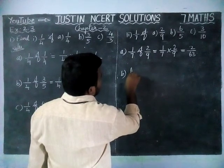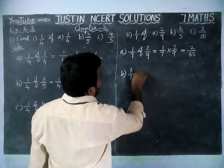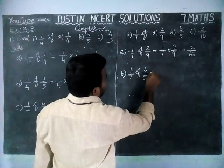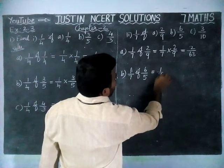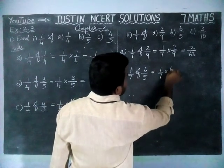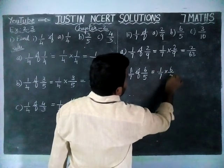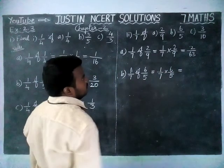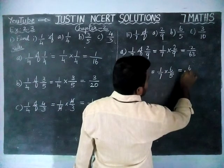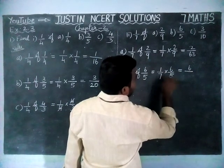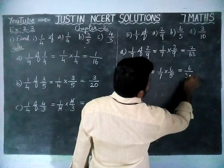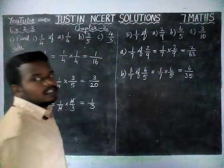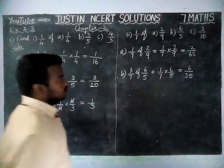Option C: 1/7 of 6/5 is equal to 1/7 into 6/5, equal to 1 times 6 is 6, divide by 7 times 5 is 35. This is also a proper fraction; we cannot simplify.